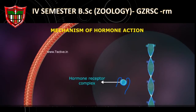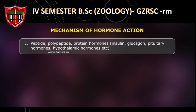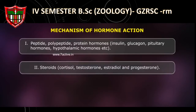Hormones can be divided into groups. Number 1: polypeptide and protein hormones — insulin, glucagon, pituitary hormones, hypothalamic hormones, etc.